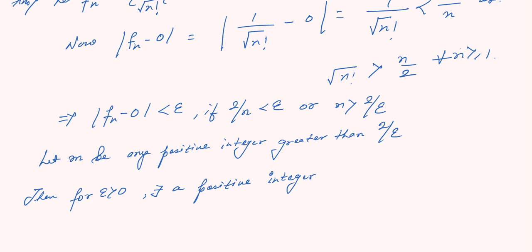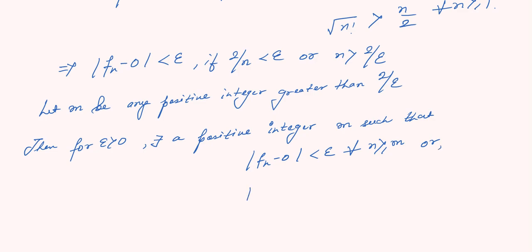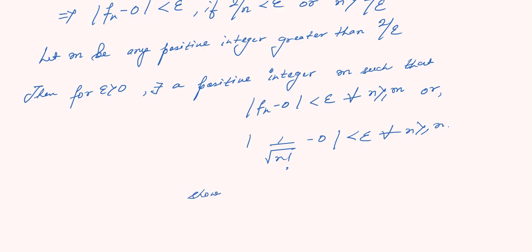By the definition, for epsilon greater than 0, there exists a positive integer M such that |f(n) - 0| is less than epsilon for all n greater than or equal to M. That is, 1 by root over n factorial minus 0 is less than epsilon for n greater than or equal to M, thus showing that the limit as n tends to infinity of 1 by root over n factorial equals 0.